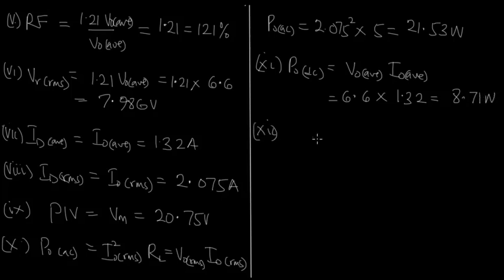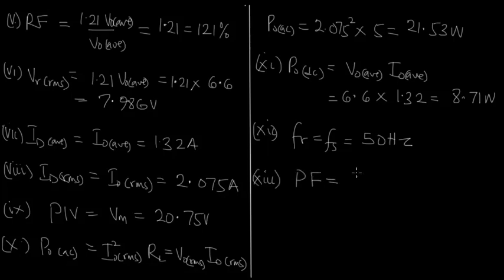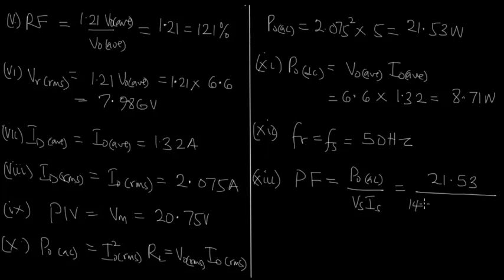The ripple frequency is the same as the supply frequency, which is 50 hertz. Finally, the power factor equals P_out AC over VS times I_out RMS, which is 21.53 over 14.67 times 2.075, giving 0.707.